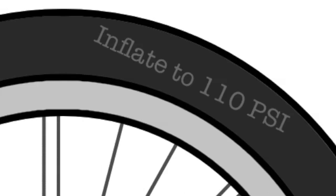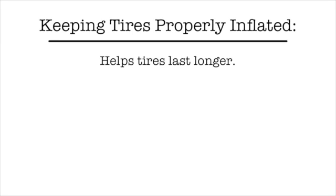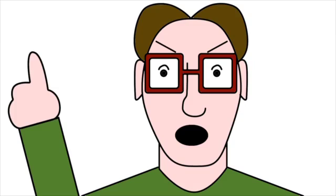A good rule of thumb is to check your tire pressure every time you pull your bike out for a ride and inflate them to the recommended pressure on the side of the tire. Keeping the tires topped off with air will help the tires last longer, the bike ride better, and will help prevent flat tires. You, sir, are a smart aleck.